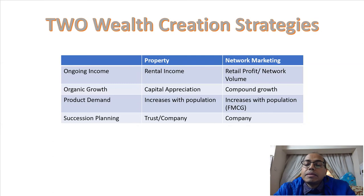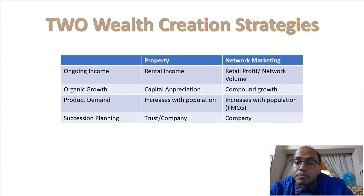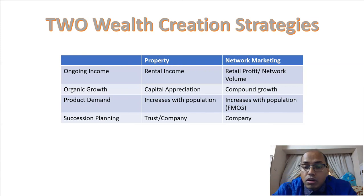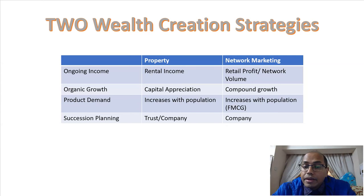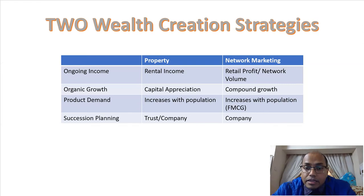You have developed an asset — the house or real estate — and the rental income is your ongoing income. In a similar way with network marketing: if you start a network marketing business, build a community, build a network and volume going through your business, then the profit you generate out of your network or retail profit from selling is your ongoing income.